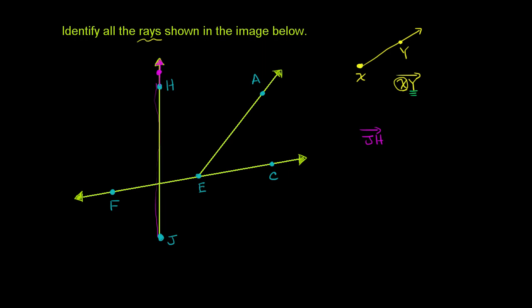Looking at point c, you might want to create a ray going right, but there's no other point to specify that direction. So going left, you have ray c,e — starts at c, goes through e, and keeps on going forever. You might also say ray c,f, but these are actually the same ray, because f and e both sit on the same ray from c. The second point just specifies direction, so c,e and c,f are the same ray and count as one.